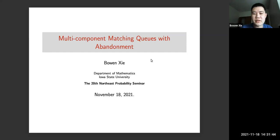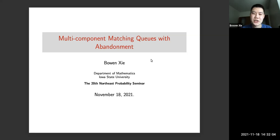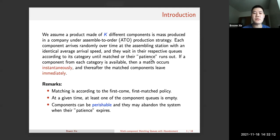Thanks to the organizers. I'm glad to be here and talk about the matching queue system. I'm going to talk about a multi-component matching queue system with abandonment. It is basically work inspired by my advisor's work about the double-ended queue, which got me thinking about what happens if you have multiple sides.